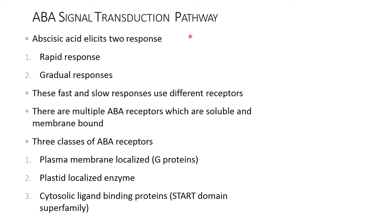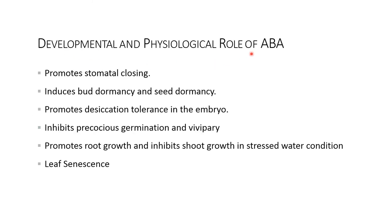Abscisic acid signal transduction pathway: ABA elicits two responses — rapid response and gradual response. These fast and slow responses use different receptors. There are multiple ABA receptors which are soluble and membrane-bound. Three classes of ABA receptors are present: one is plasma membrane-localized G-protein, another is plastid-localized enzyme, and the third is cytosolic ligand-binding protein having a START domain superfamily.